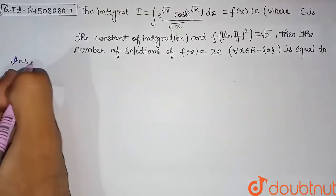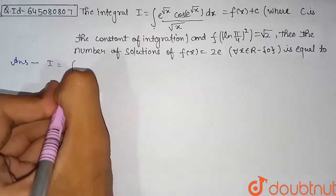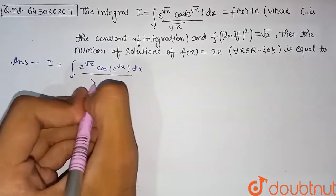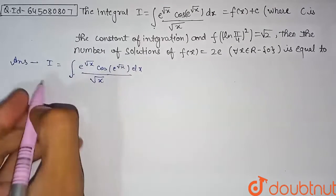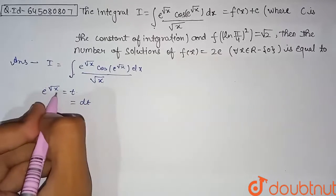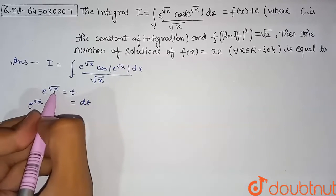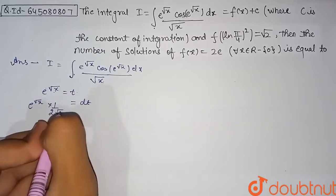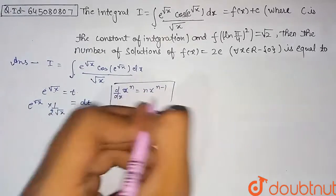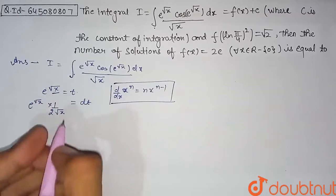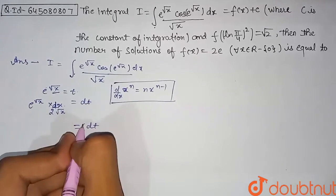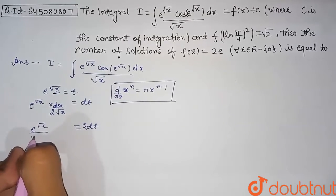Let's begin the solution. We will first solve this integration. I is given as the integration of e^(√x) · cos(e^(√x)) / √x dx. We substitute e^(√x) = t. Differentiating, dt = e^(√x) · (1/(2√x)) dx, using the formula d/dx(x^n) = nx^(n-1).